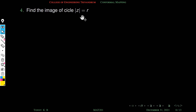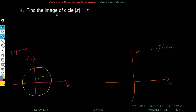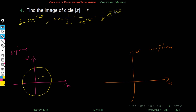Next problem: find the image of the circle |z| = r under w = 1/z. We use polar form: z = r·e^(iθ). Then w = 1/z = (1/r)·e^(-iθ). Taking the modulus: |w| = |1/r · e^(-iθ)| = (1/r)·|e^(-iθ)|.